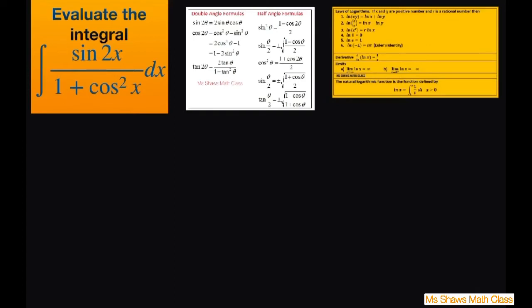The first thing I want to do is just go ahead and rewrite this. I'm going to expand my double angle here as 2 sine x cosine x. I'm also going to pull the 2 out here. So this is going to be sine x cosine x divided by 1 plus cosine squared of x dx.